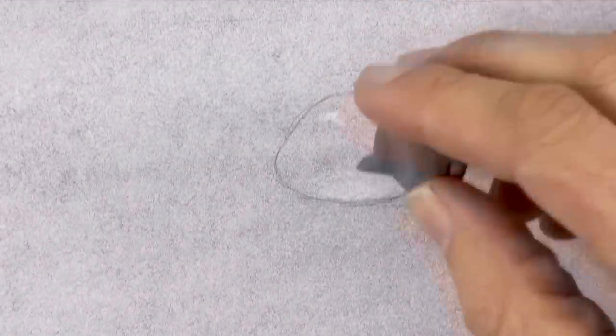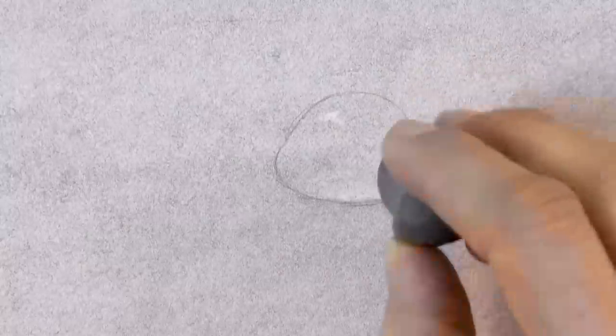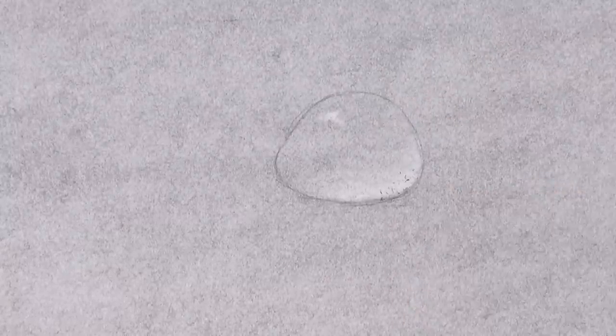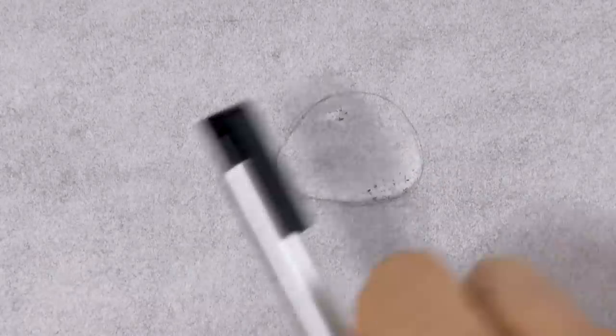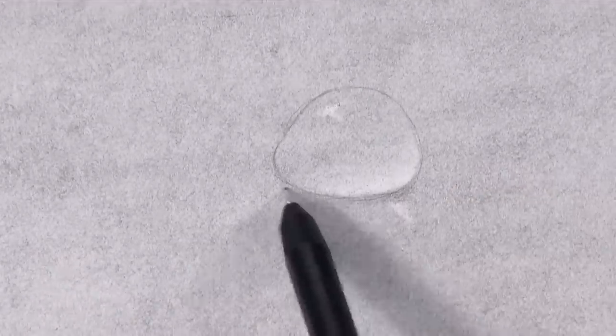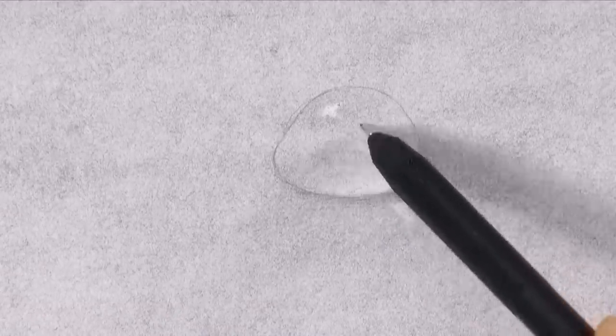Very good! And with the pen eraser we reinforce it a little bit. I want to make sure it is the same direction than the one we used in the other drop. Then with the pencil we darken the cast shadow in the upper area. All right!